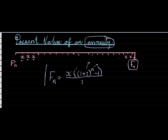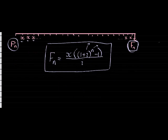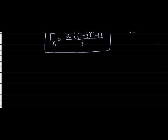Now that we've quickly looked at this again, let us see what is the relationship between the future value and the present value. I think it's best described by looking at a loan. Imagine you take up a certain loan — let's call the value of that loan PM. In other words, that's how much the bank gives you right now. That is the present value of the loan.